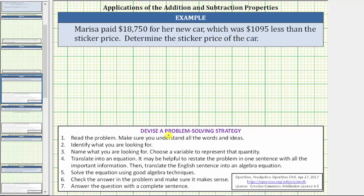We will also be using the problem-solving strategy outlined here below, where number one, we're told to read the problem, make sure you understand all the words and ideas. Two, identify what you are looking for. Three, name what you are looking for and choose a variable to represent that quantity. Four, translate into an equation. Five, solve the equation. Six, check the answer. And seven, write the answer as a complete sentence.